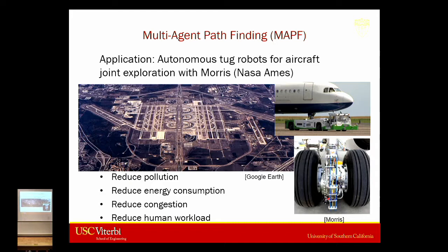The problem we're really interested in is creating autonomous tug robots for aircraft. The idea is that when an airplane lands, you want to tow it all the way from the runway to the gate to reduce pollution, energy consumption, congestion, and human workload. Lots of planes will be towed at the same time, and planes are big — they can collide with each other. So again, we have an interesting multi-agent pathfinding problem.